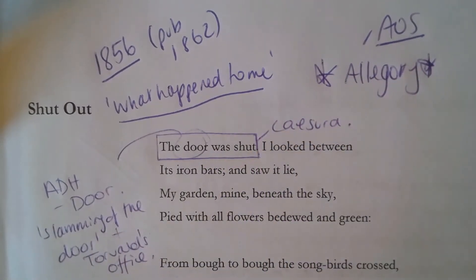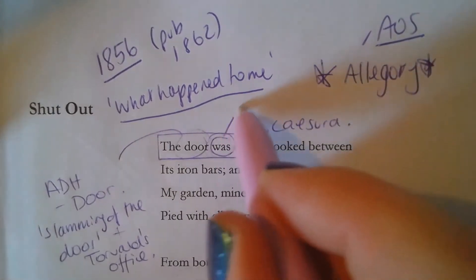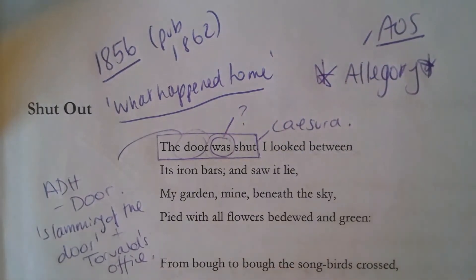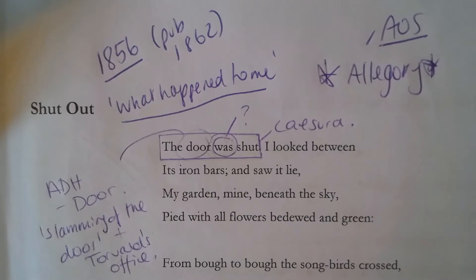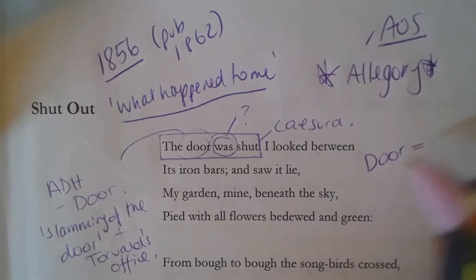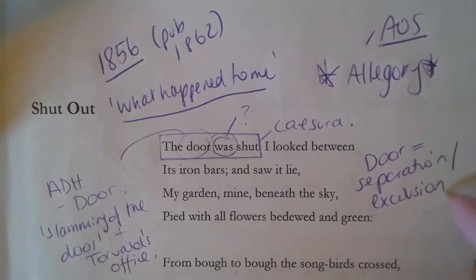Interestingly, Rossetti is deceptively simple — notice that it was 'shut,' which is quite passive, and it's not entirely clear who was doing it. So we straight away have that connection with this idea of doors representing separation or exclusion, and I think that's a really key theme or symbol to look for in A Doll's House and in these poems, because that will then tell you what this is an allegory for.